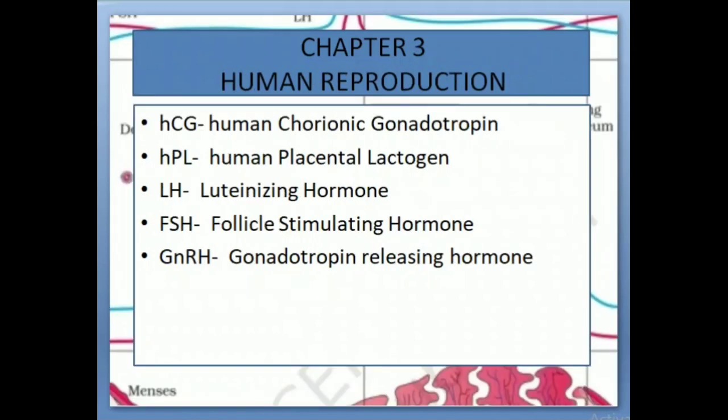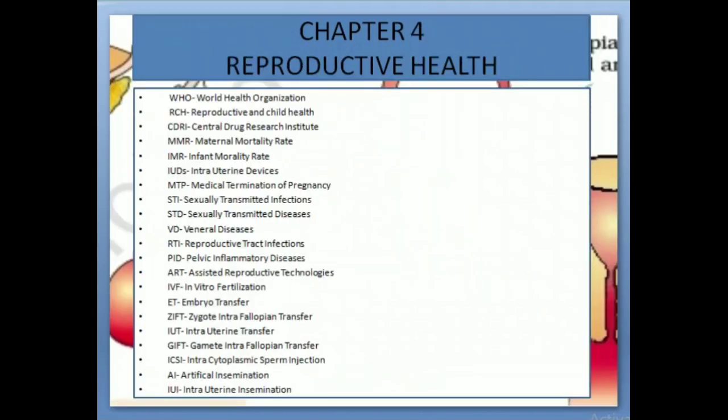Chapter 3: Human Reproduction. HCG: Human Chorionic Gonadotropin. HPL: Human Placental Lactogen. LH: Luteinizing Hormone. FSH: Follicle Stimulating Hormone. GnRH: Gonadotropin Releasing Hormone.